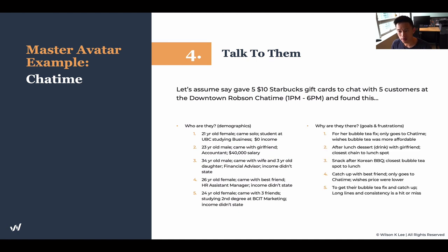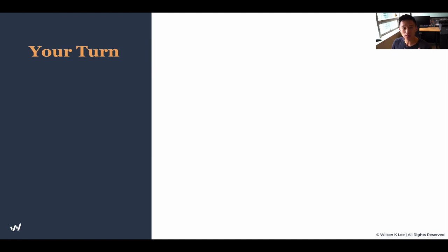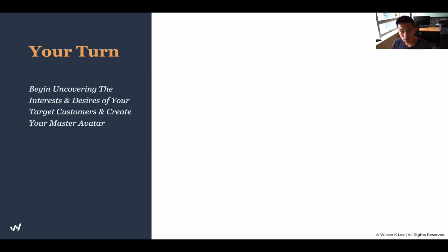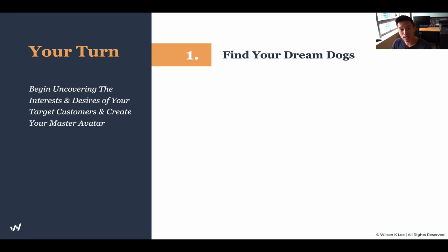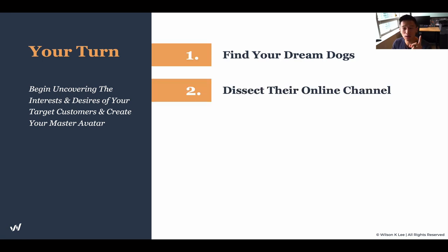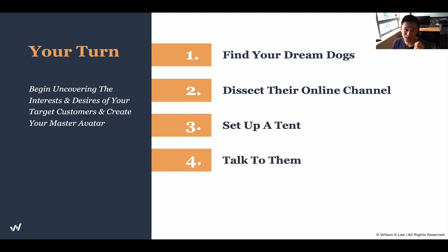Why are they there? For a bubble tea fix — they only go to Cha Time after lunch as dessert, or as a snack after Korean barbecue. Dessert is what people are going there for. These are all really great insights. To summarize: number one, find your dream dogs; two, dissect their online channels; three, set up a tent; four, talk to them. These are the steps to find your customer avatar. Download the worksheet in the link below and fill it up as you go.